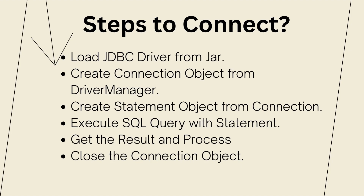The last component we need before executing any query is a Statement object, which can be obtained from the connection object. There are three types of statements: first, the simple Statement, used to create SQL statements with no parameters; second, PreparedStatement; and third, CallableStatement — each with their respective features. Once we have everything ready, we can use the statement to execute the query.